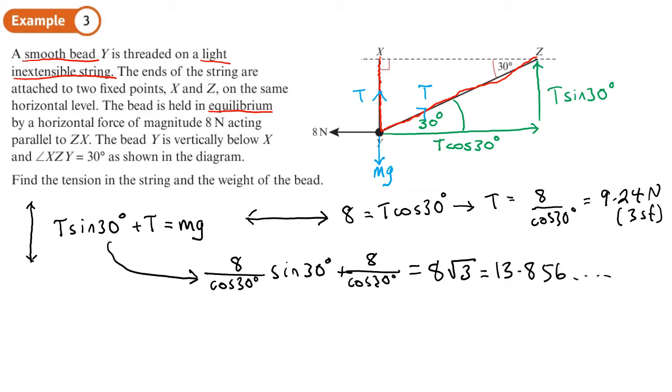So let me write my answers down here. So T, 9.24 newtons. And the weight of the bead, weight of bead, comes out as 13.9 newtons. So notice this asks for the weight, not the mass. So we don't need to divide by g to find a mass of the bead.